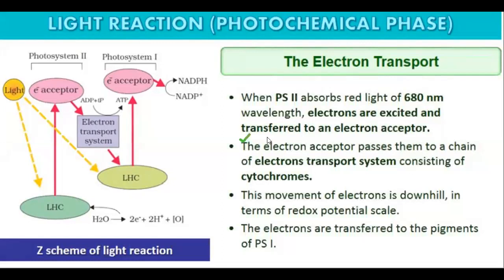The electron acceptor passes them to a chain of electron transport system consisting of the cytochromes. What is important is that the electron transport system consists of the colored pigments of cells. The cytochromes pass the electron from one part to the next part.